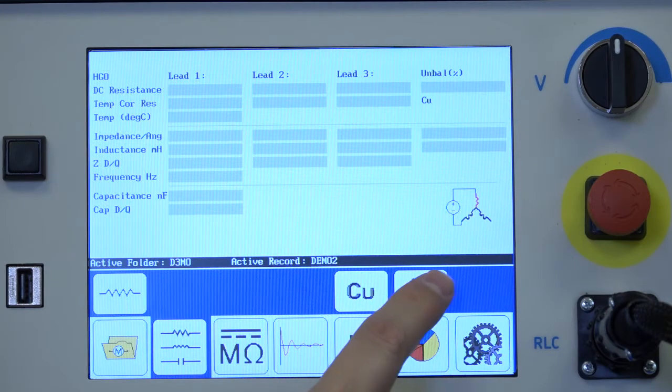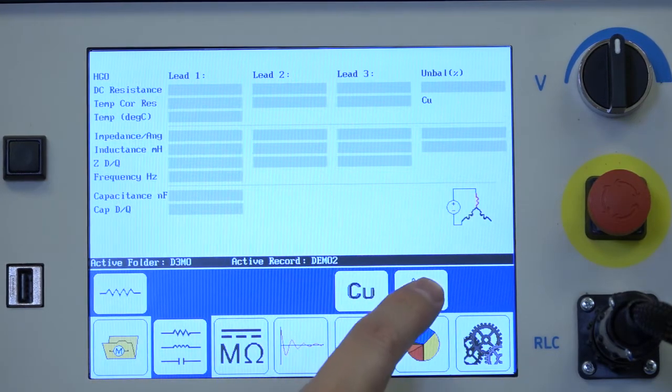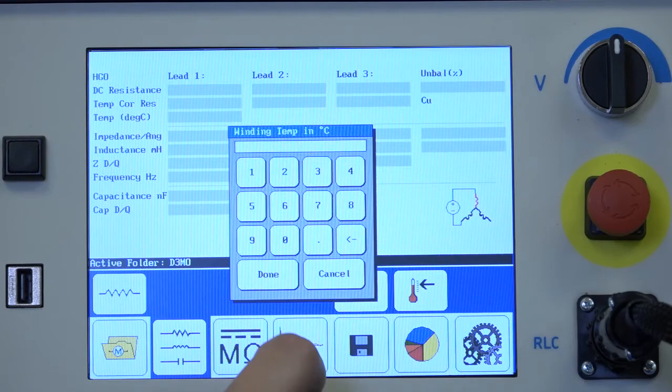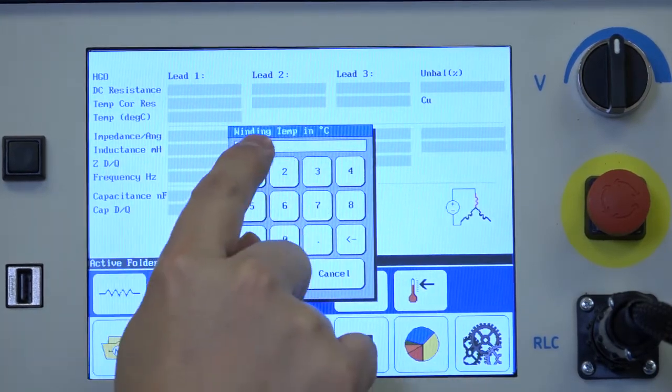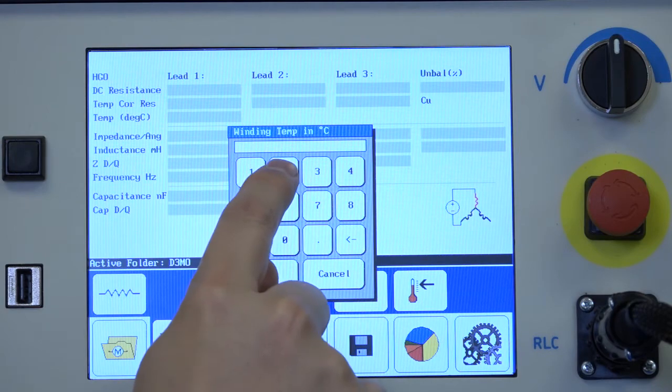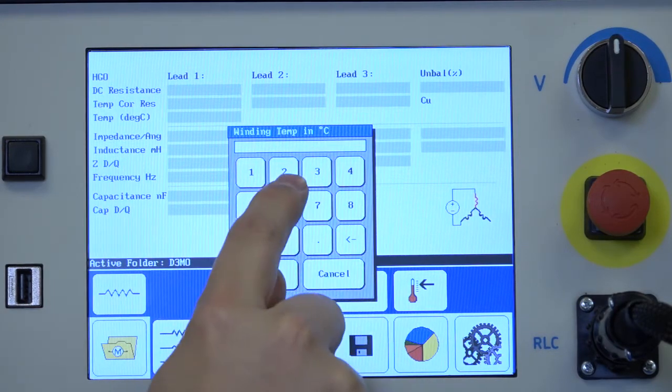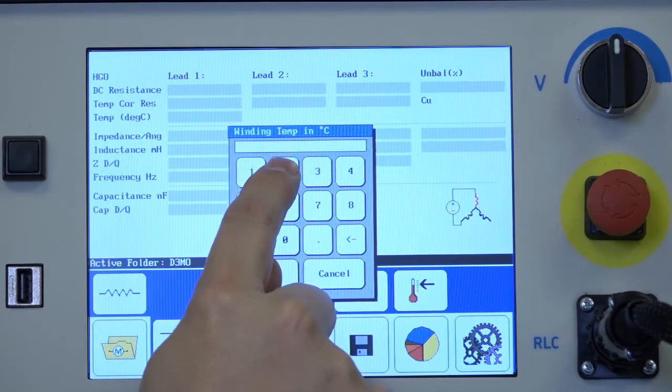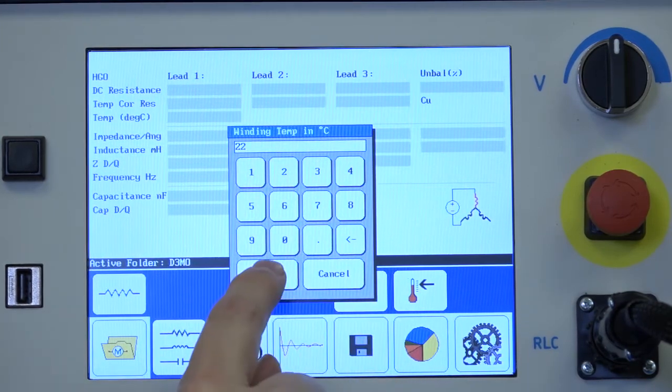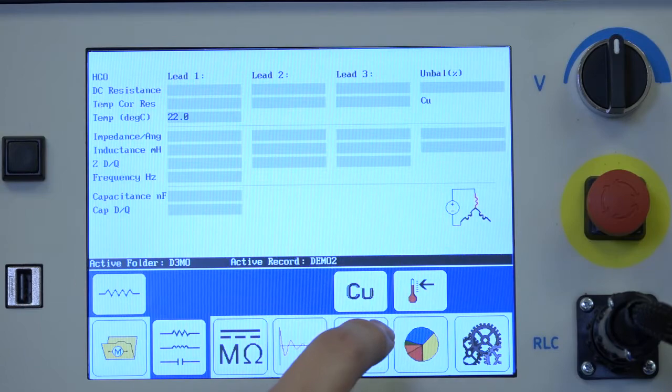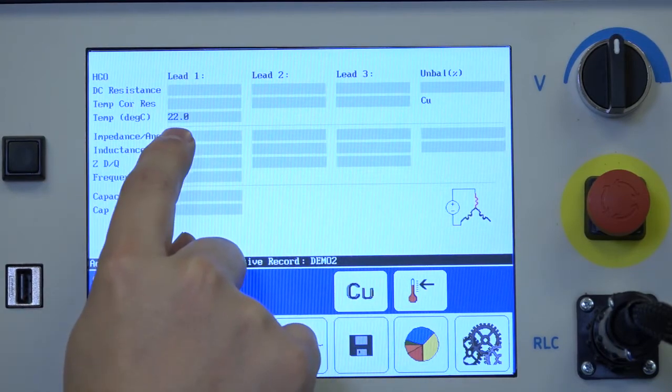And I also want to enter the temperature of the winding. So I'm going to select the temperature icon and enter my winding temperature. In this case I'm entering in degrees Celsius. That can be changed in the user settings option. My winding temperature is 22 degrees Celsius. Click done. Now that will be used for temperature compensation.